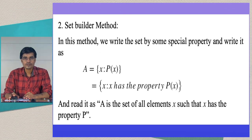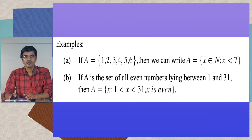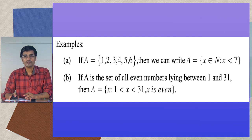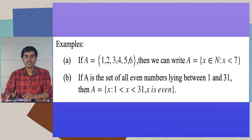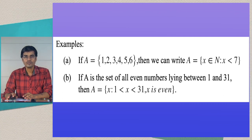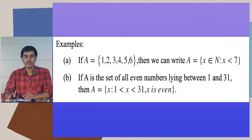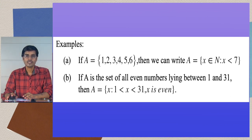Here are some examples of sets represented in set builder form. Suppose a set is given in tabular method as {1, 2, 3, 4, 5, 6}. We can write this in set builder method as: A = {x : x ∈ N and x < 7}, where N means the set of natural numbers. The elements from 1 to 6 are natural numbers, so we write x satisfies the property x < 7 and x is a natural number.